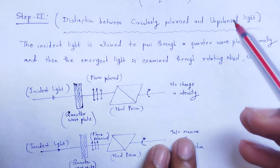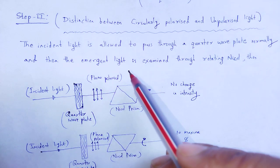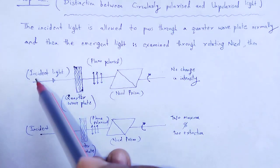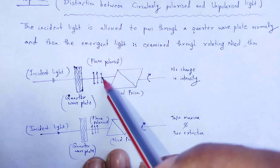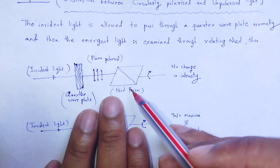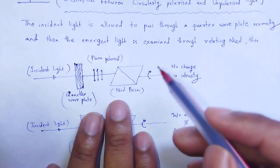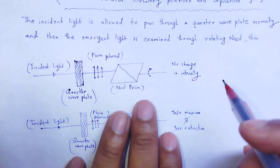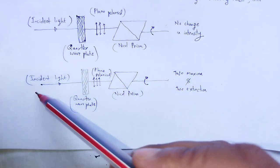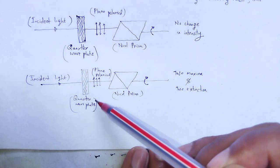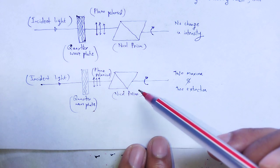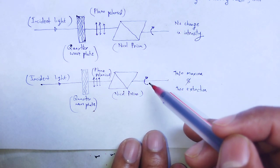The incident light is allowed to pass through a quarter wave plate normally, and then the emergent light is examined through a rotating Nicol prism used as an analyzer. The incident light is passed through the quarter wave plate, giving plane polarized light. Again, when that plane polarized light is passed through the Nicol prism acting as an analyzer, we rotate the Nicol prism under full rotation.